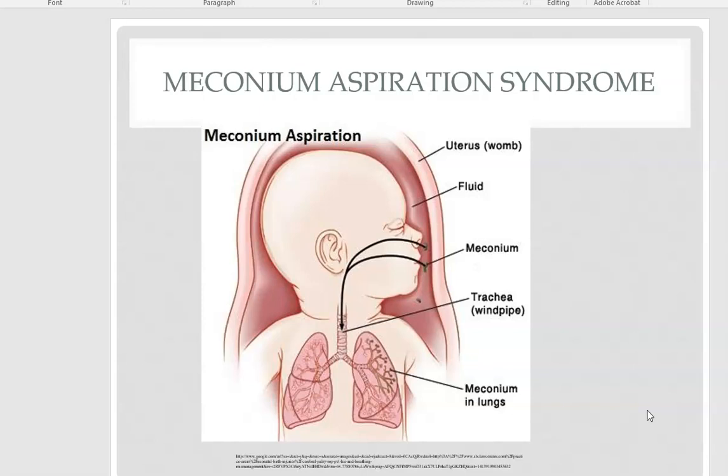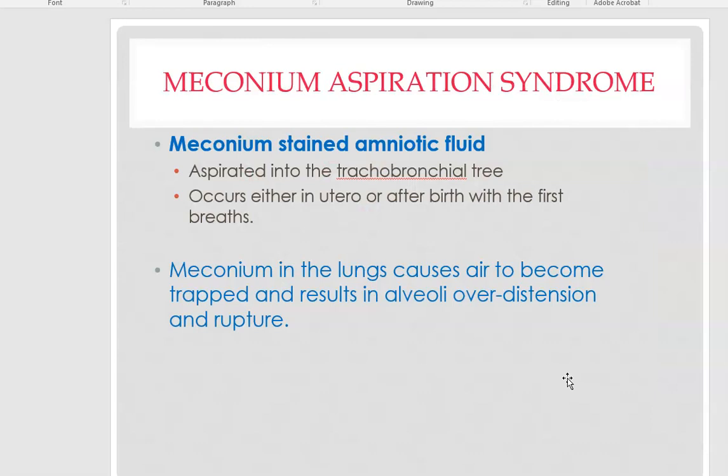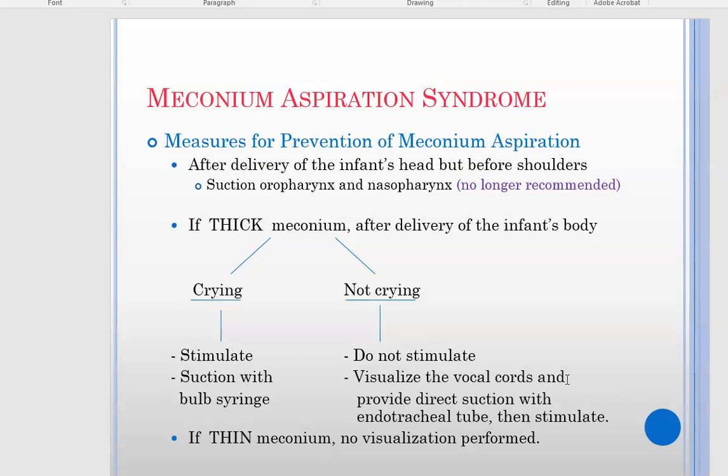A baby who aspirates meconium may have meconium-stained fluid in their mouth, nose, and lower respiratory tract such as the trachea, and it can actually go into their lungs. In utero, a sudden gasp draws amniotic fluid into the lower airway. After delivery, the aspirated meconium in the tracheobronchial tree causes air to be trapped in their airway when they start breathing, and it causes over-distention of the alveoli, which can actually rupture.